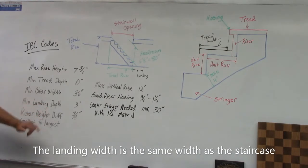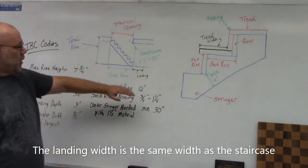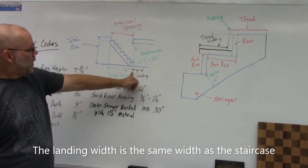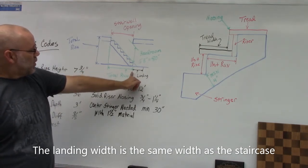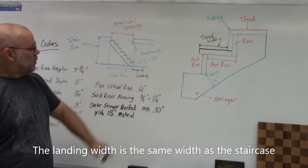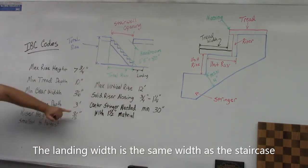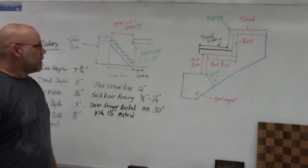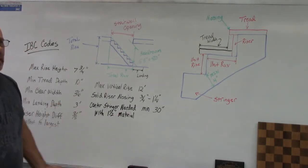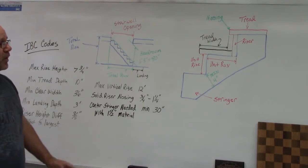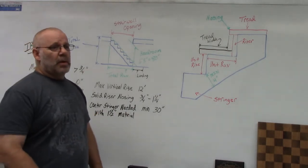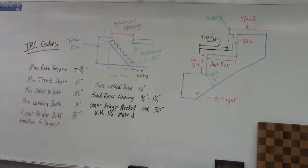The next code is minimum landing depth — that's three feet. The landing depth is measured from the end of your stair stringer out, and it has to be three feet. So if there's a door, it would have to be three feet from the end of your staircase, so you have room when you reach the bottom.